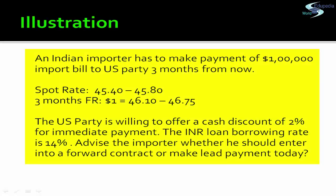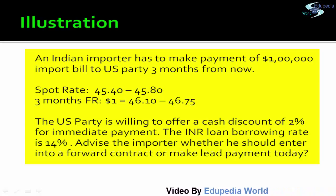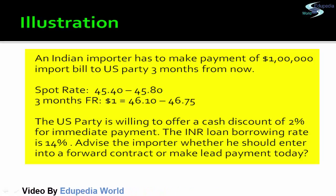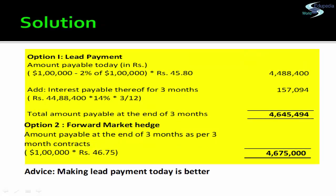Let's do an example. An Indian importer has to make a payment of USD 1 lakh on an import bill to a party three months from now. The spot rate is 45.40 to 45.80. The three months forward rate is 46.10 to 46.75. The US party is willing to offer a cash discount of 2% for immediate payment. The INR loan borrowing rate is 14%. The importer must decide whether to enter into a forward contract or make a lead payment today.